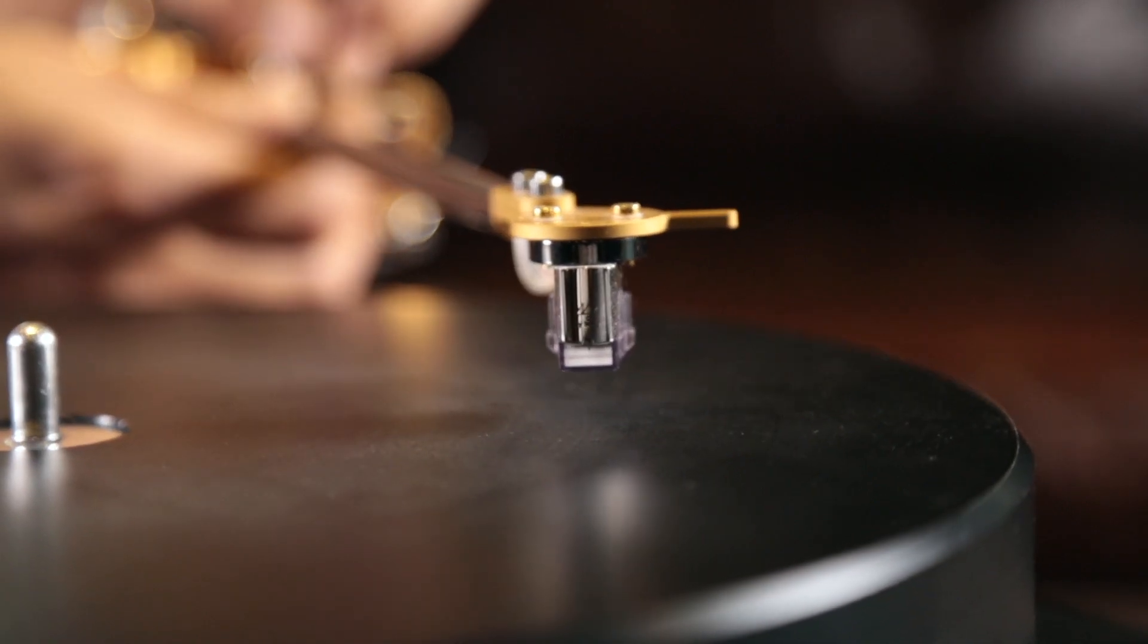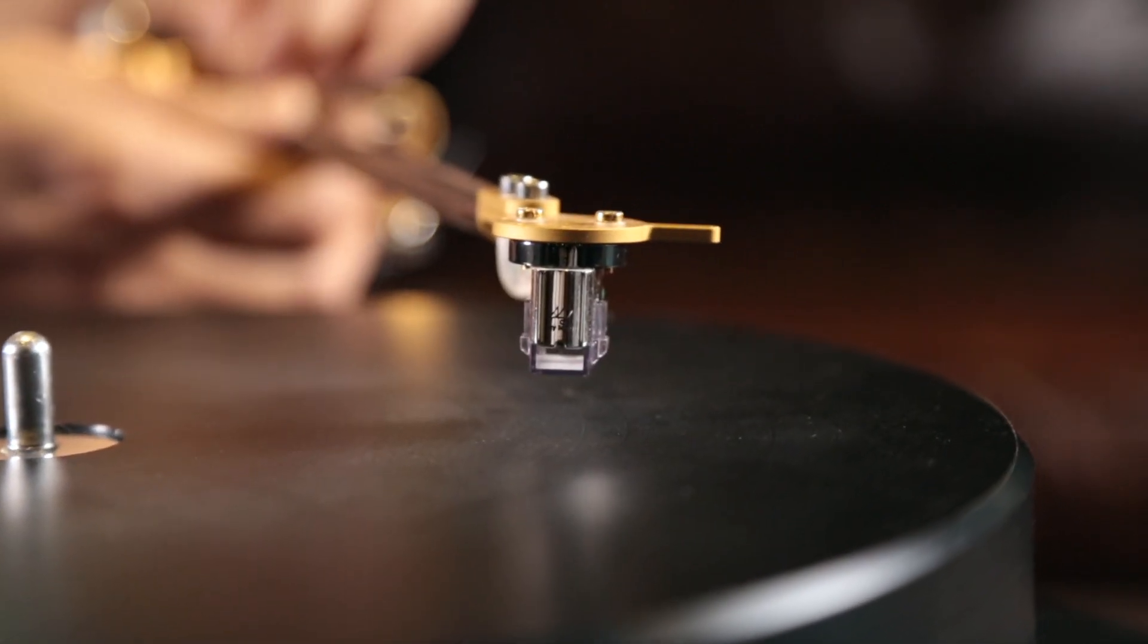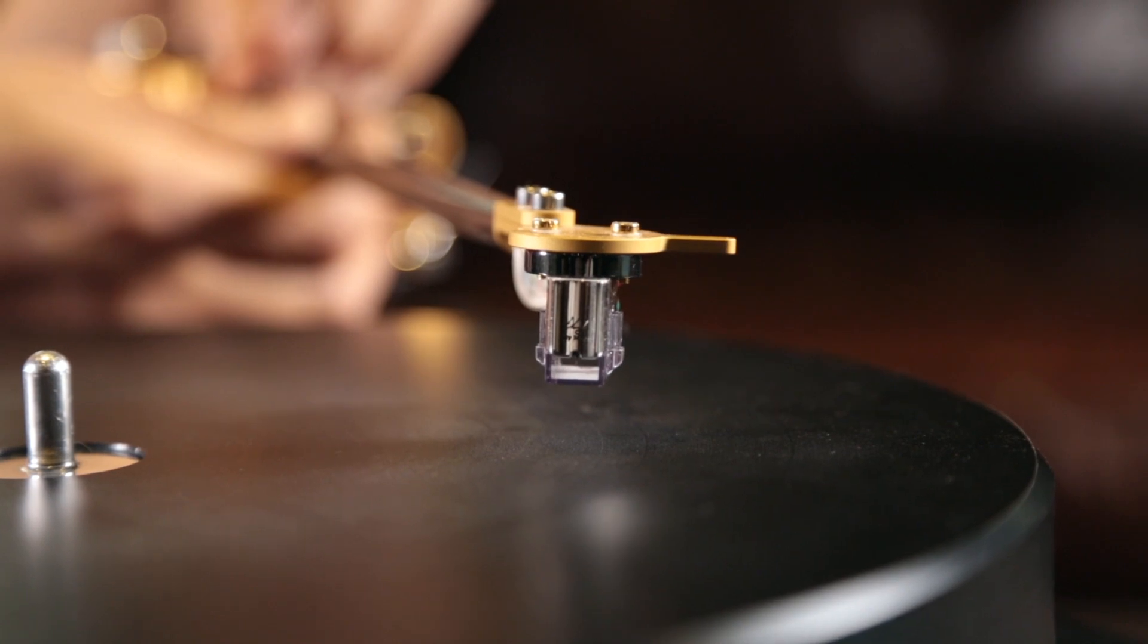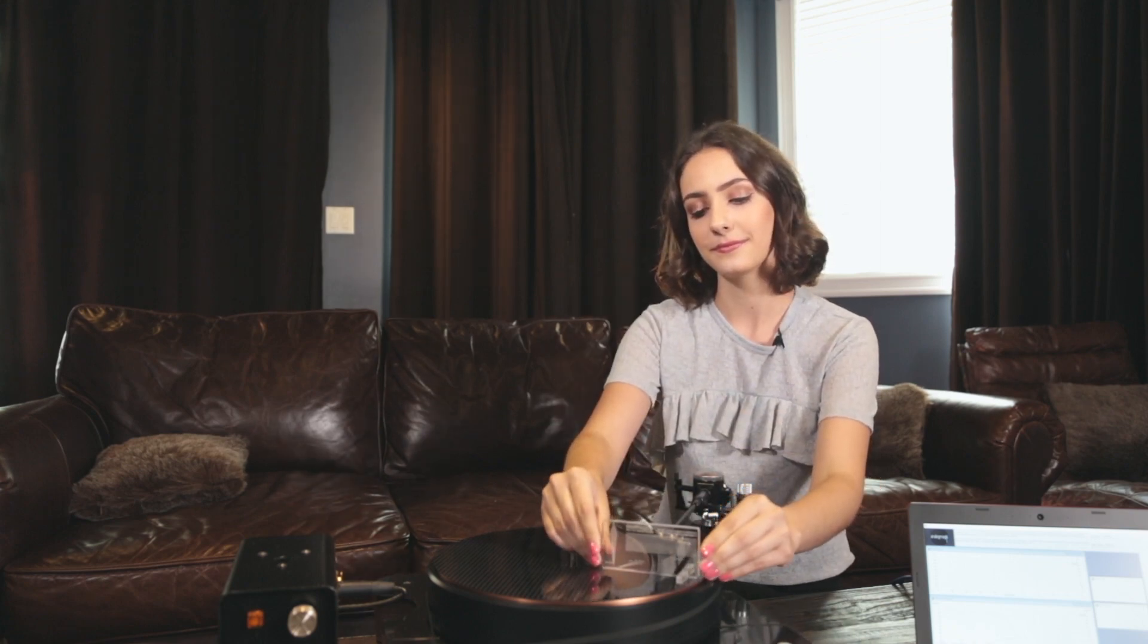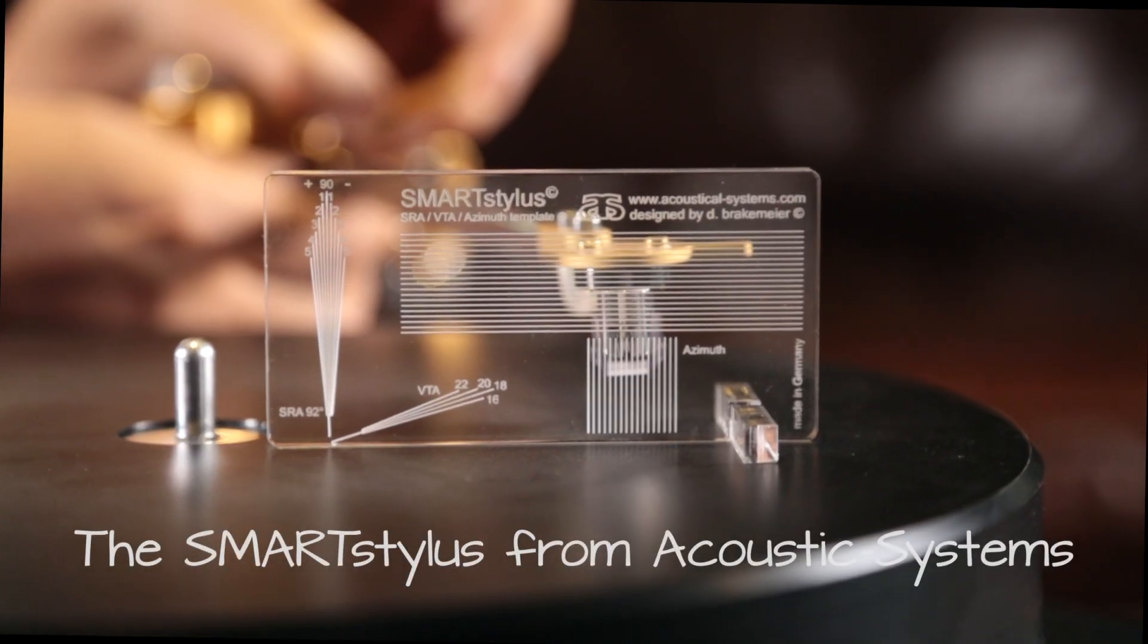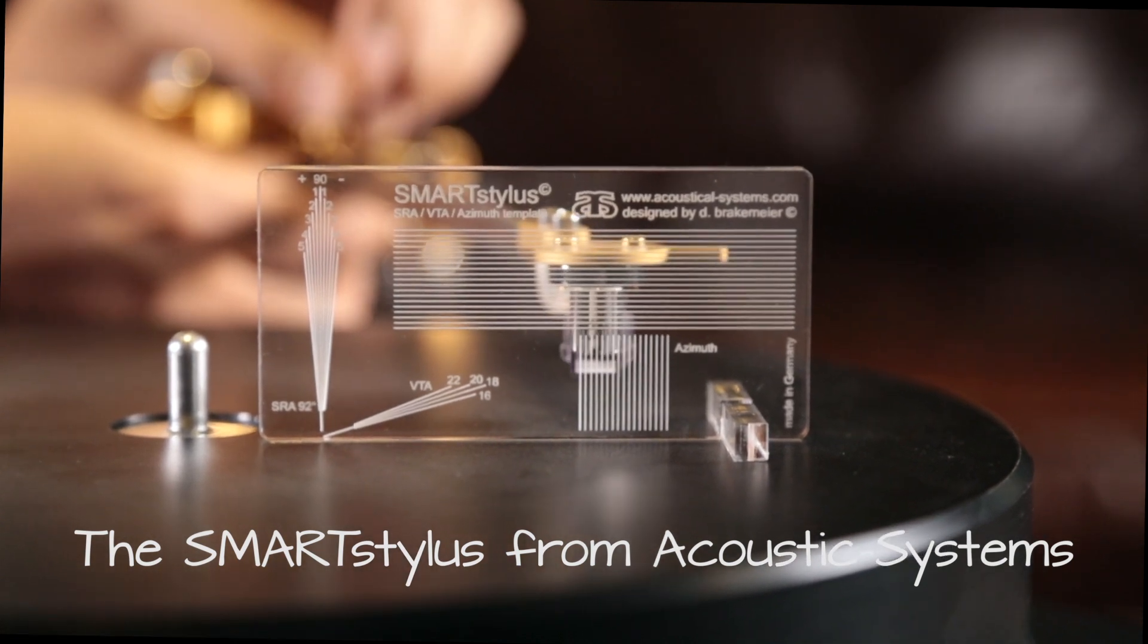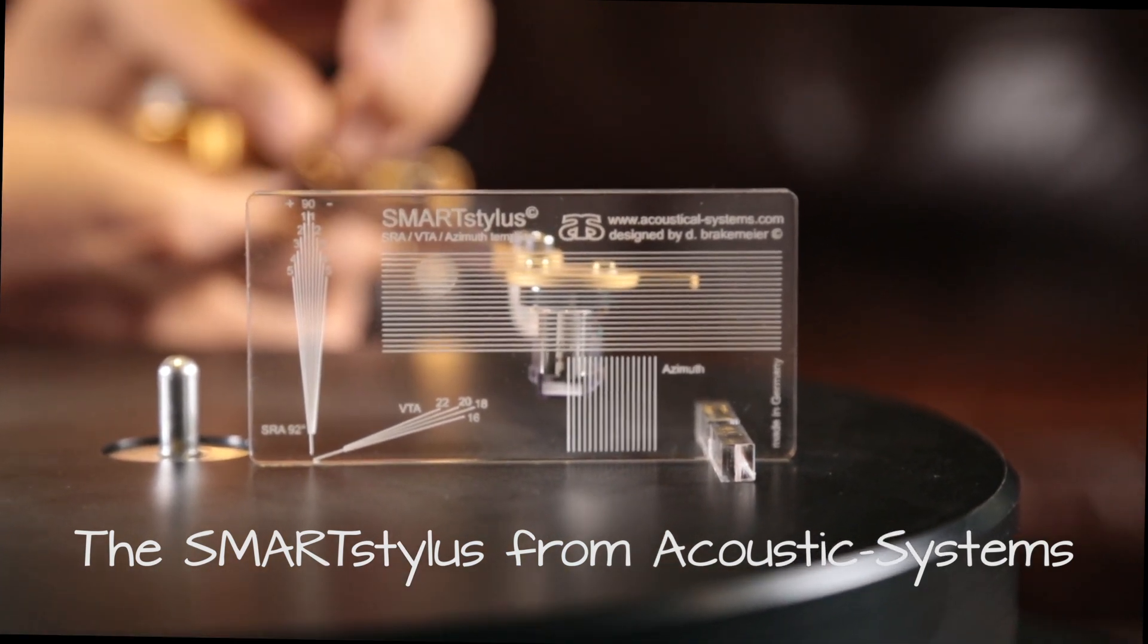A good starting position will be to align the head shell so that it is perfectly parallel with the record surface. A good tool for this job is the acoustical system smart stylus acrylic block. This allows you to visually gauge the cartridge body versus the parallel lines printed on the transparent acrylic block.